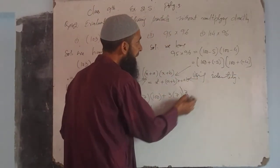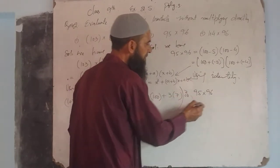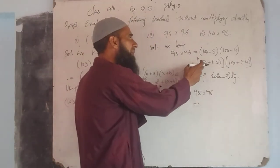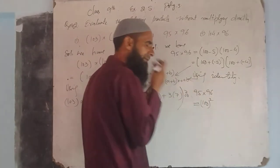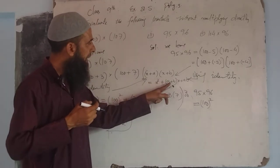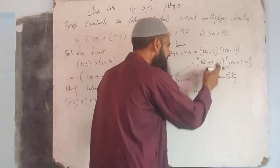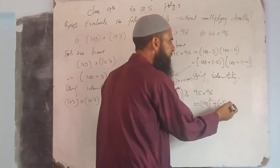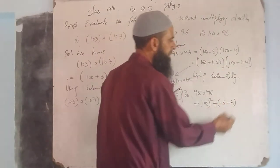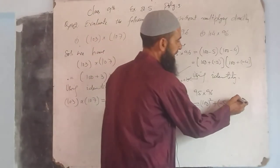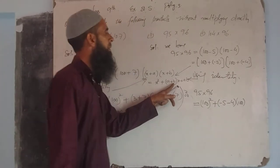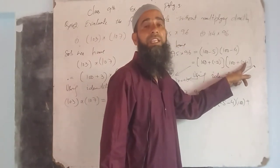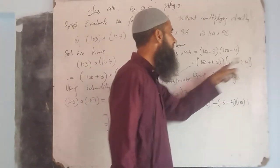Therefore, 95 into 96 is equal to x², x ka value yahan pe bhi 100 hai, so 100². Plus (a + b) into x: a ka value minus 5 hai, plus b ka value minus 4, that is minus 9 into 100. Plus ab: a hamare paas minus 5, b hamare paas minus 4, minus into minus becomes plus, so 5 into 4 that is 20.